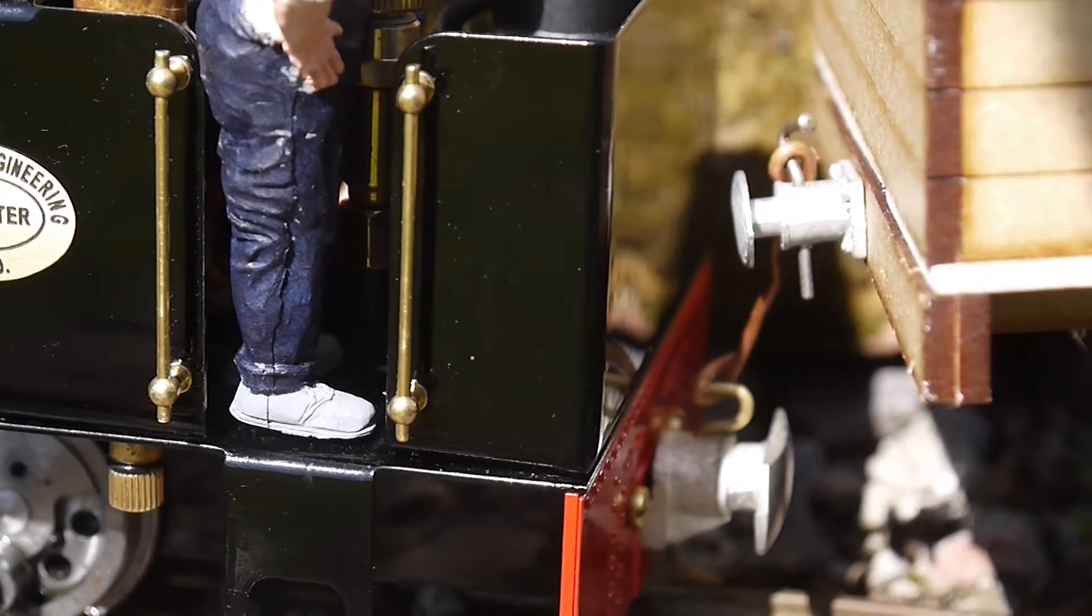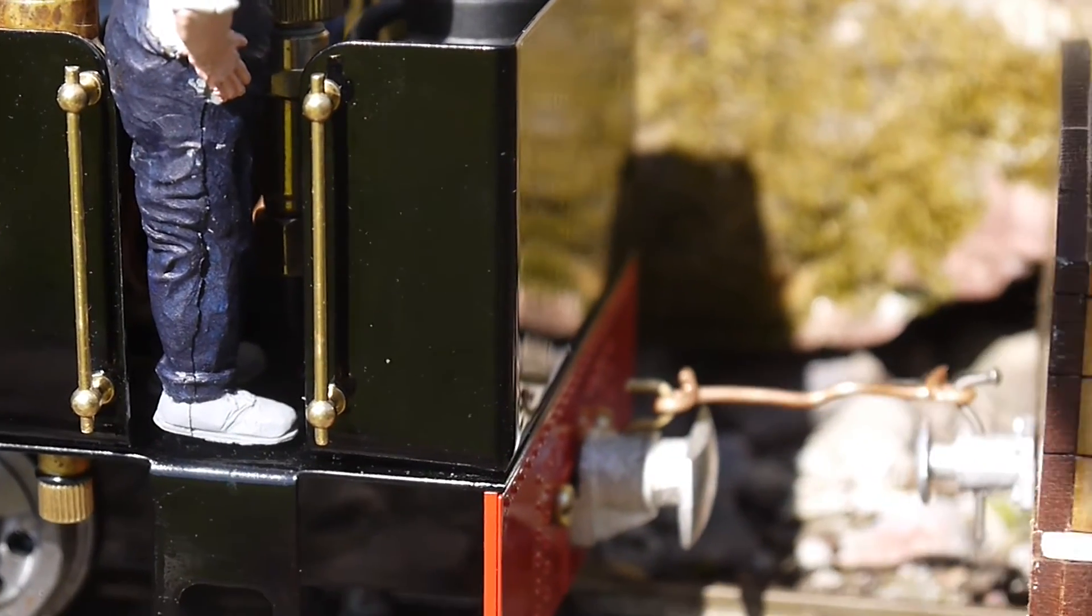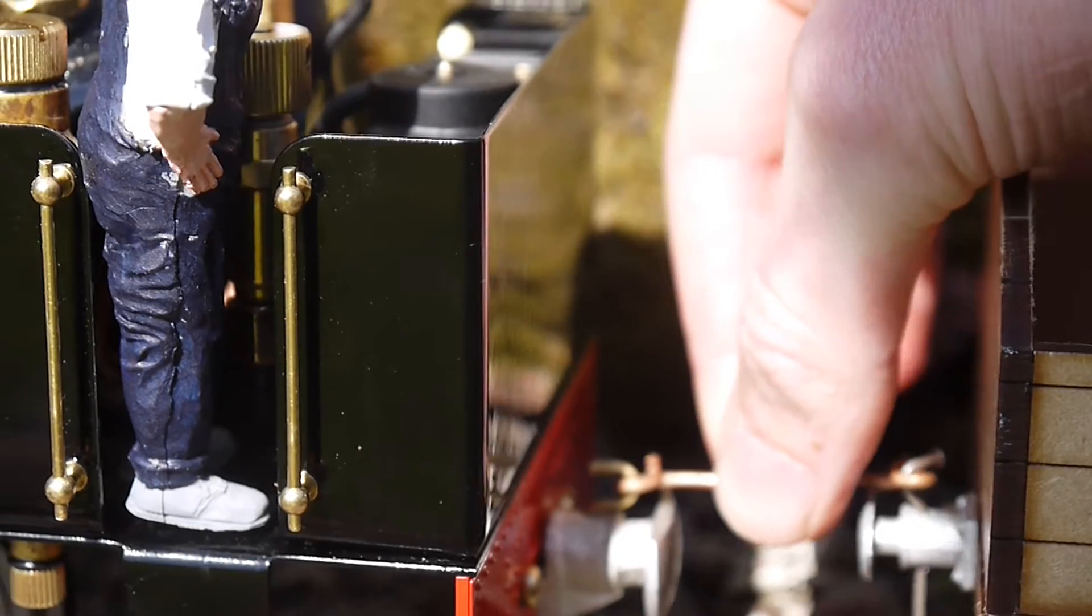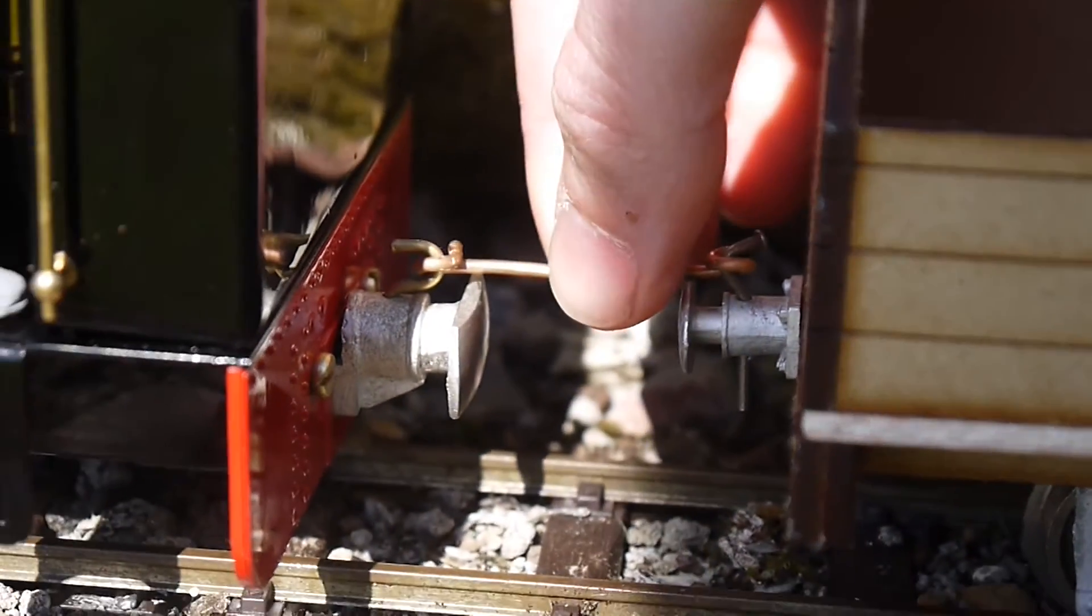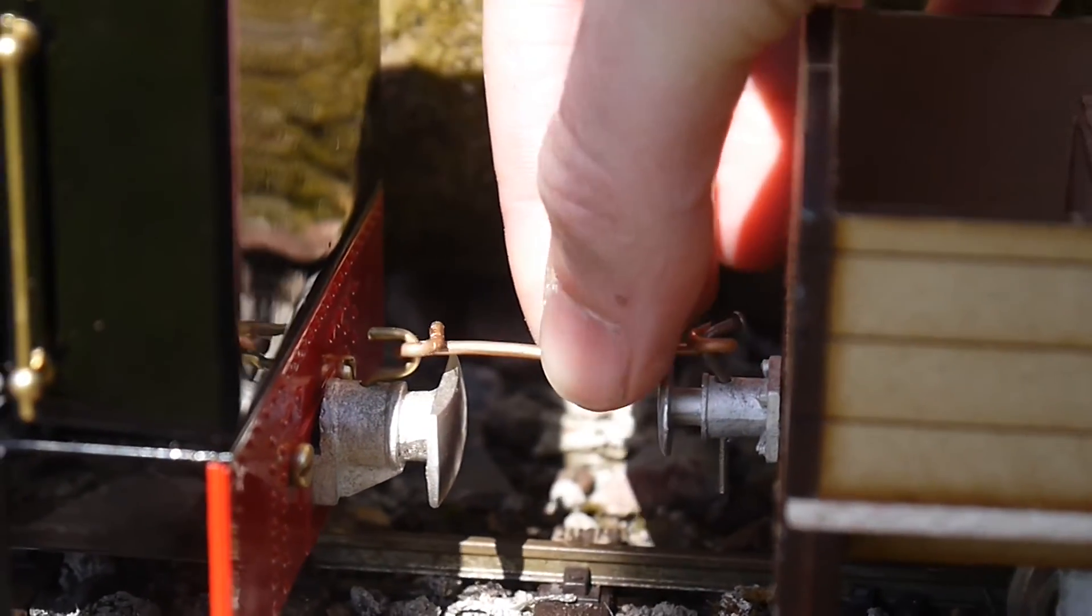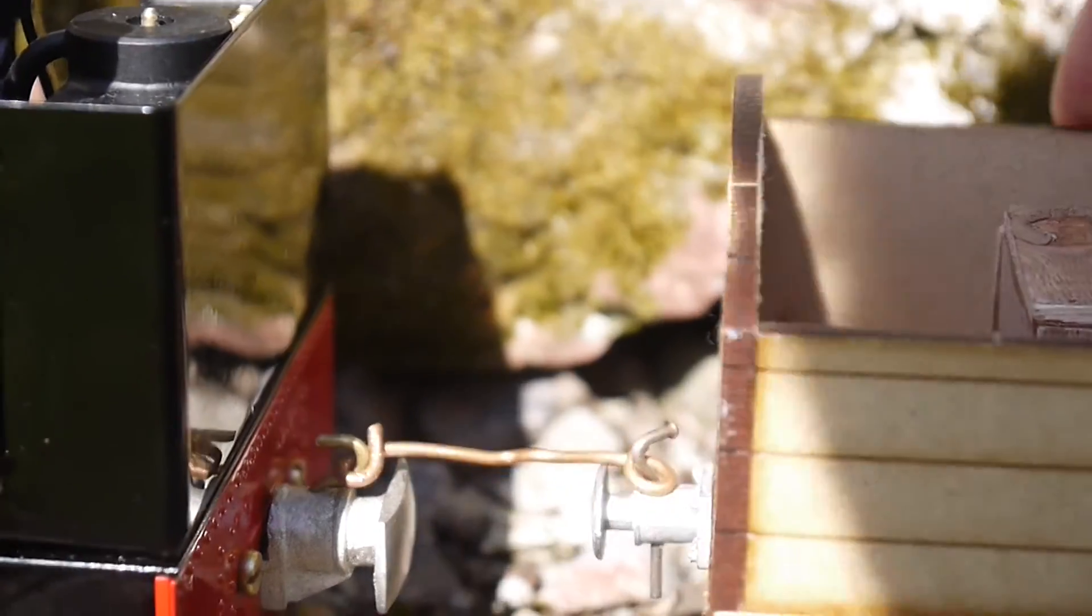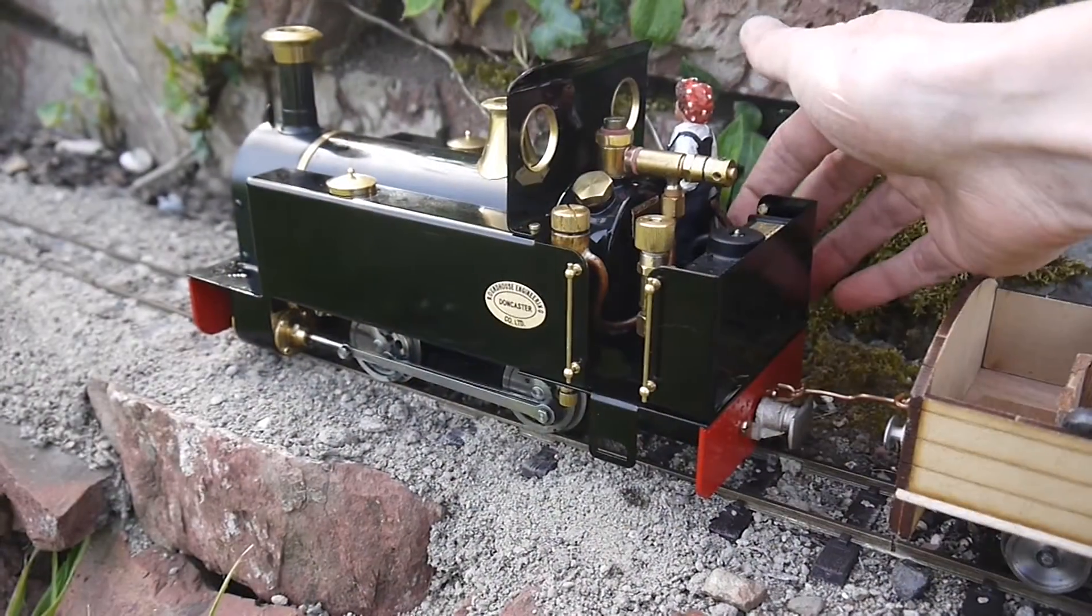And now I've coupled the momentum wagon to Millie with a piece of wire that's acting as a rod rather than using the chain, so that all the momentum is transmitted directly back to the locomotive.